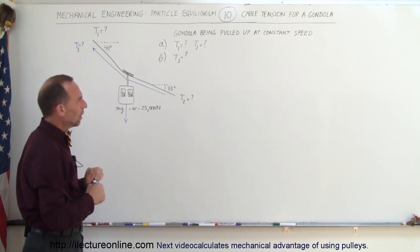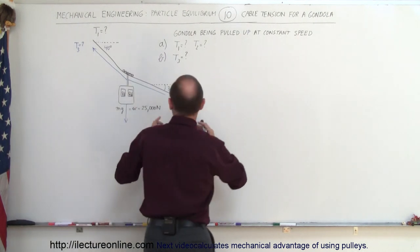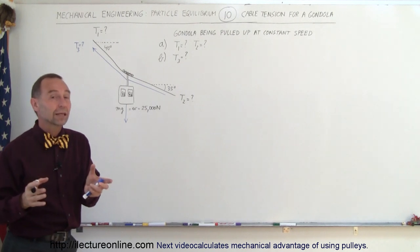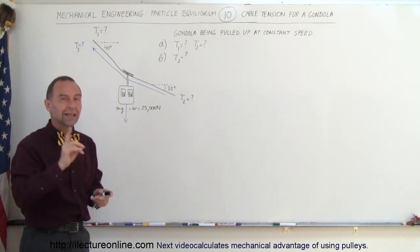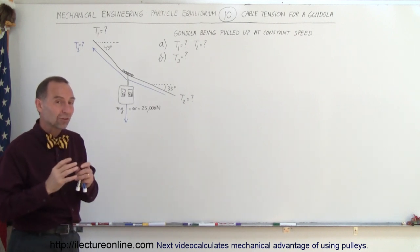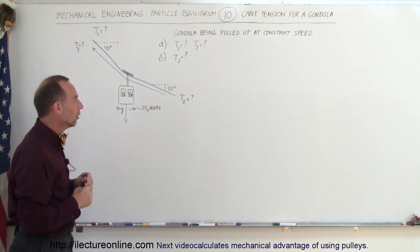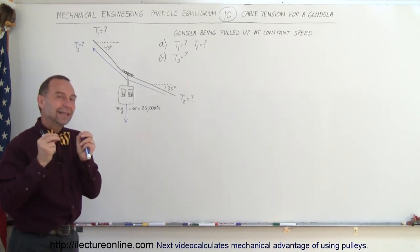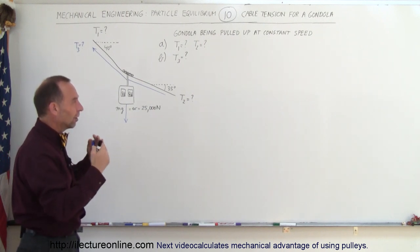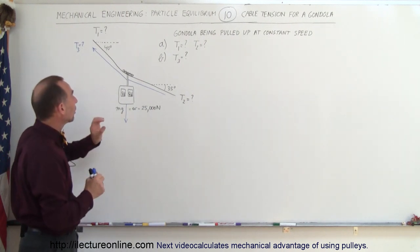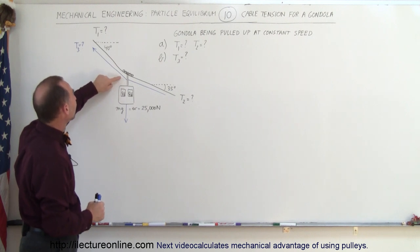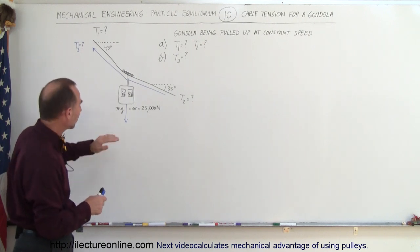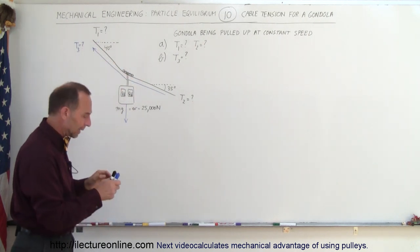Since everything is at equilibrium — and you might say, wait, the gondola is moving, so how can things be in equilibrium? Well, if there's no acceleration, then there's no net force, so it's exactly the same situation as if nothing was moving at all. Whether the gondola is sitting still or being pulled up at a constant speed, we can say everything is at equilibrium. We'll start by ignoring the blue cable and just working with the black cable alone.